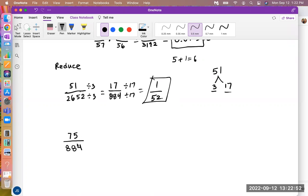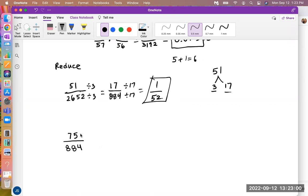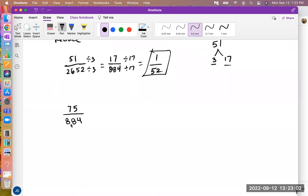Okay. Let's look at this second one, just for fun. I take the smallest number, now we're doing a different problem, I'm trying to reduce 75 over 884. So I take the top number, the 75, and I prime factor it. That's 3 times 25, and then 25 is 5 times 5.